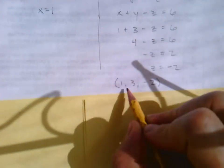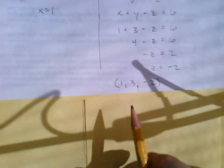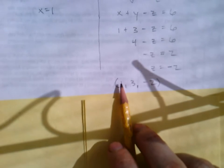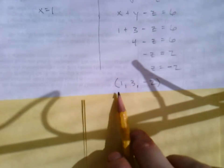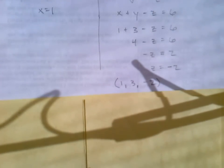All right. At that point, we're going to write our solution. This time, it's an ordered triple. So we've got x, y, z, 1, 3, negative 2 inside parentheses.